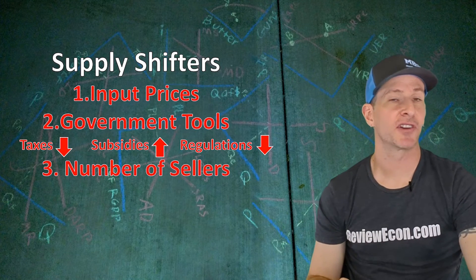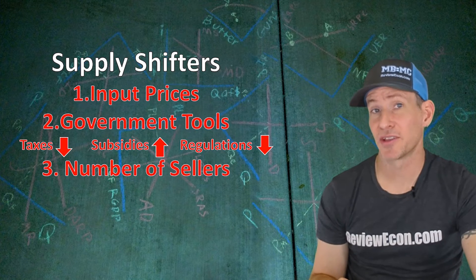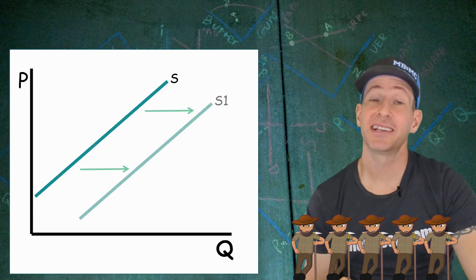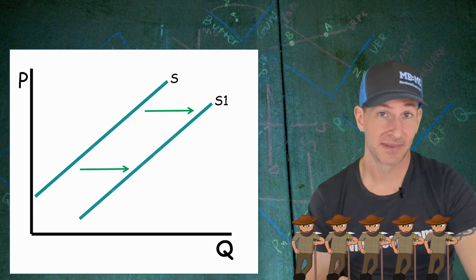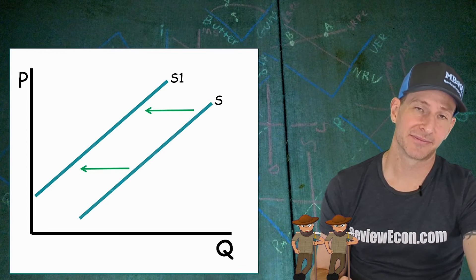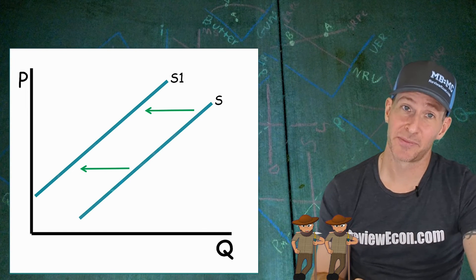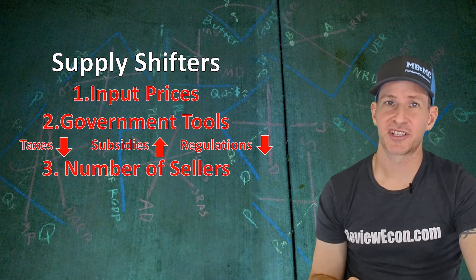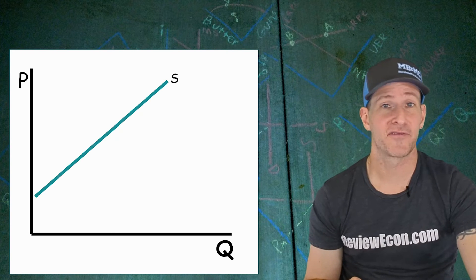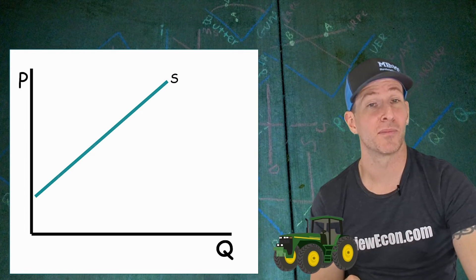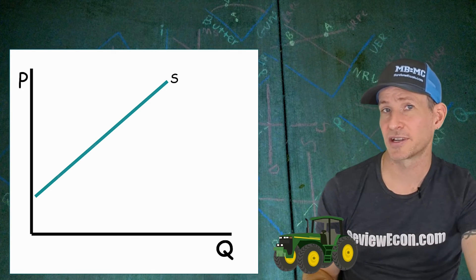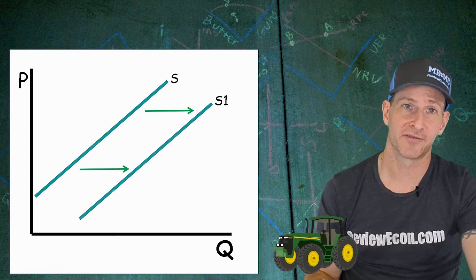The next supply curve shifter is the number of sellers — sometimes called competition. If the number of farmers producing wheat increases, we'll see an increase in the supply of wheat. If some farmers exit the market, supply decreases because fewer farmers are likely to produce less wheat. The next shifter is technology, which generally increases supply. If farmers get new, more efficient tractors, that new technology increases productivity and we'll see an increase in the supply of wheat.